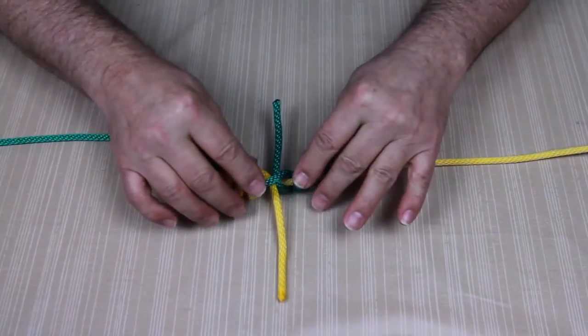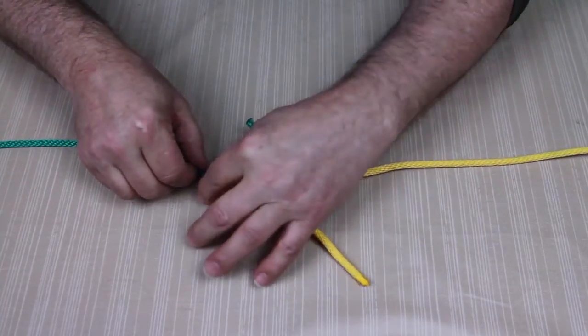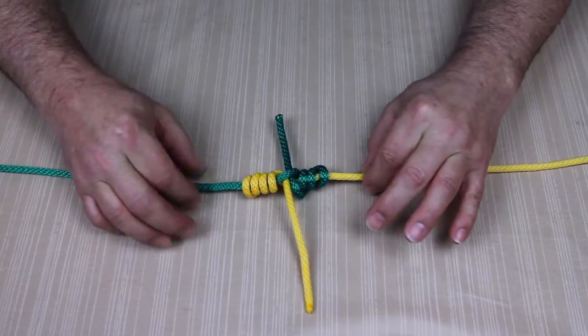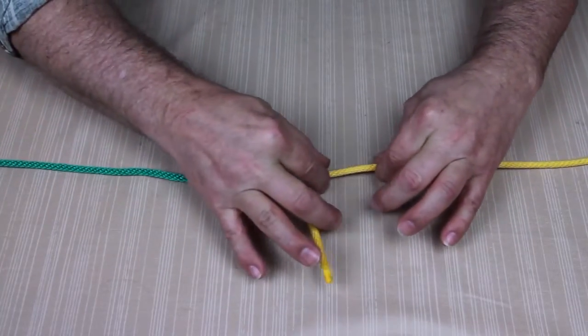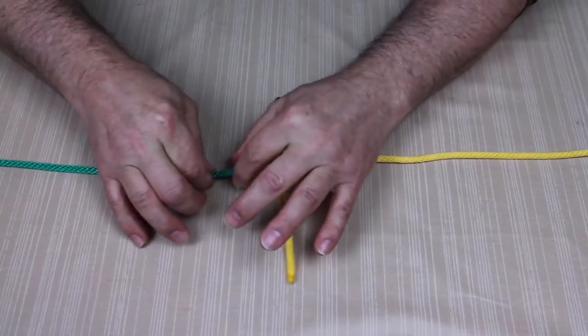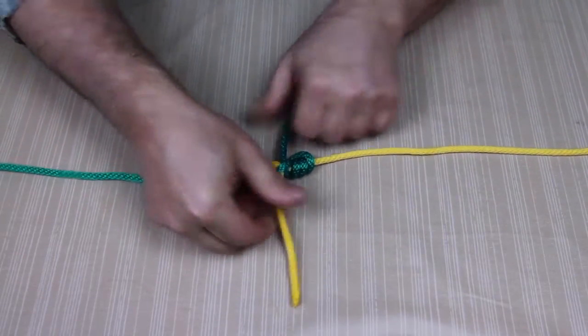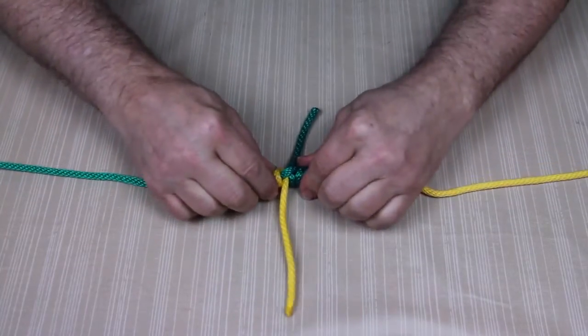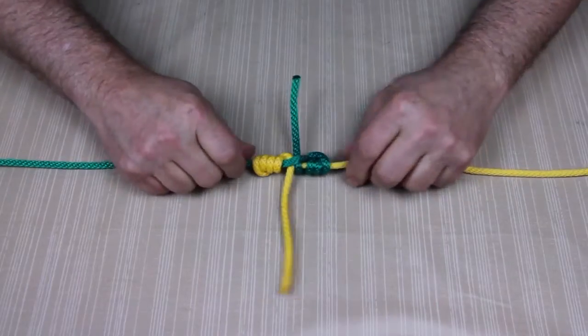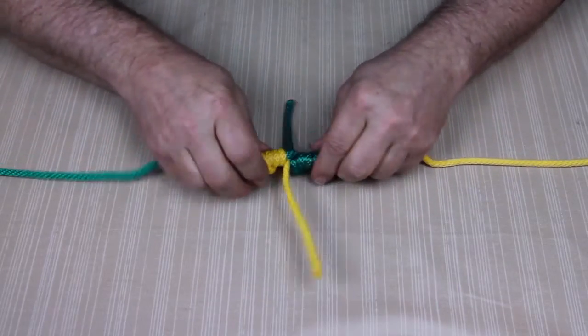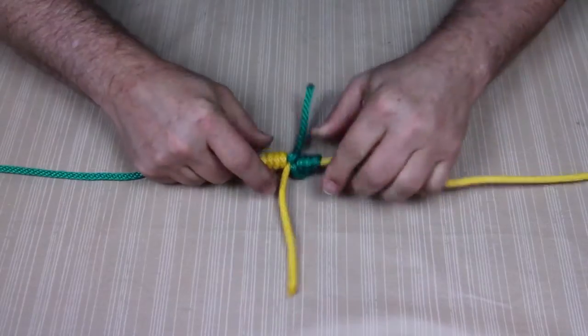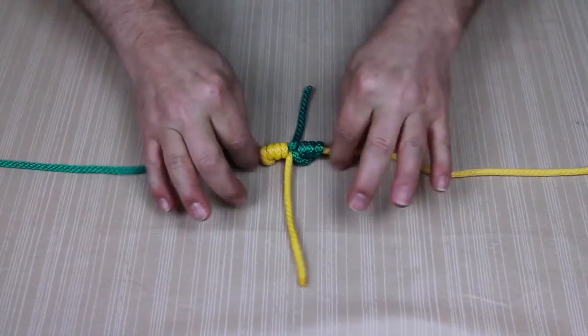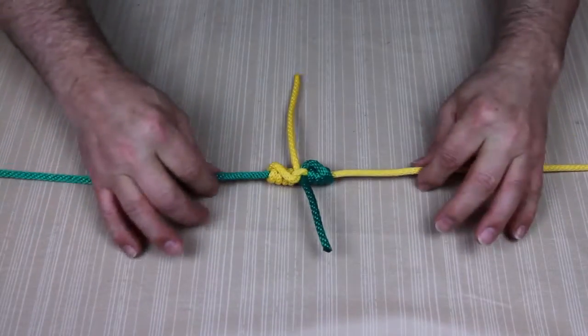Then moisten the knot slightly and begin to slowly pull the knots together by pulling on both ends of each main line until the knots become tightened. Keep pulling and moistening until the knots bind the two separate lines together.